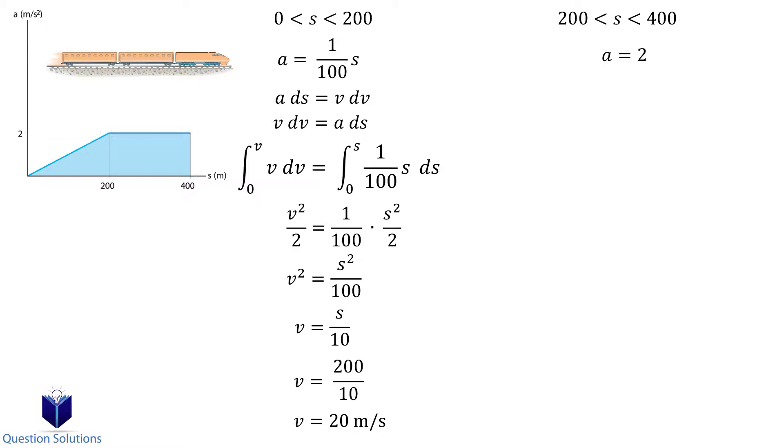Substituting 200 gives us a velocity value of 20 meters per second. In other words, at the point the train crosses the 200 meter mark, it's traveling at a speed of 20 meters per second. Those are our lower bounds for the next integral.